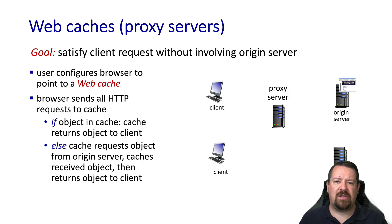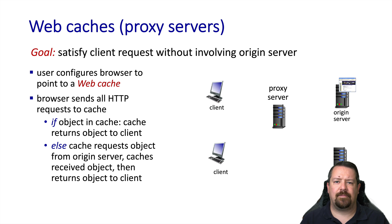Web caches, also known as proxy servers, serve multiple functions, but the basic goal is to return the object the client is requesting without having to contact the original web server, also known as the origin server. Most web caches today are transparent caches, so no user configuration is required — their operation is transparent to the end user. Whenever the cache receives a request for a particular object, it will return a local copy of the cached object if it exists and is not expired. Otherwise, the cache will send the request to the origin server for that object, return it to the user, and store a copy for future requests.